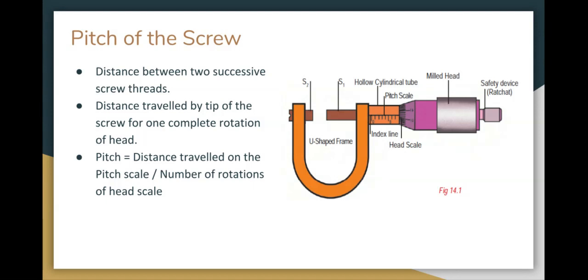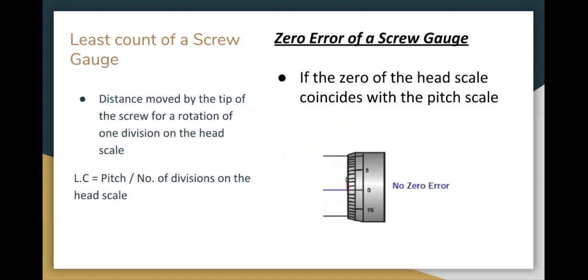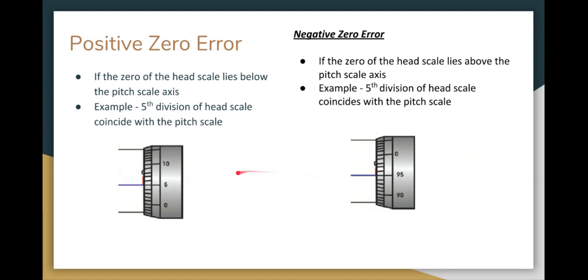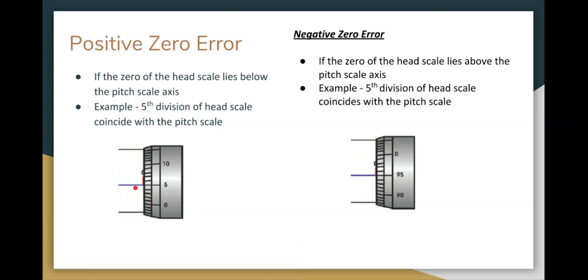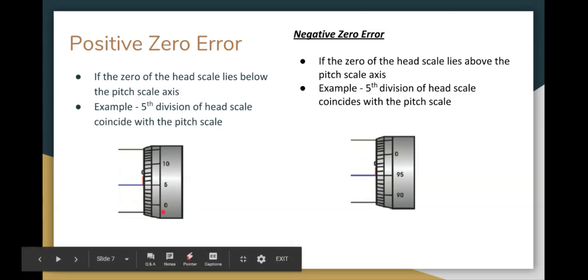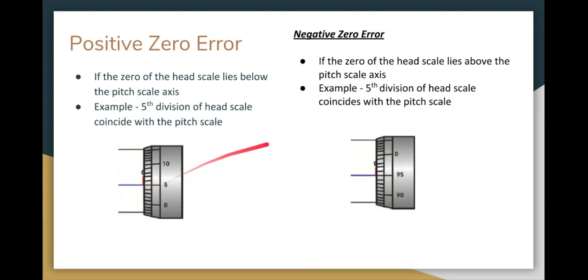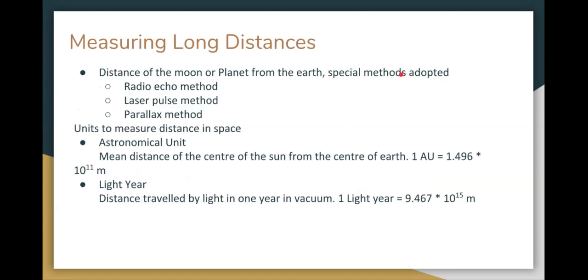Negative zero error is when the head scale is above the pitch scale. So that's negative zero error. The head scale is above the pitch scale. So if five divisions are higher and coincide, this is positive zero. If five divisions are higher, this is equal to coincide, so this is negative zero. That means this is negative zero error.